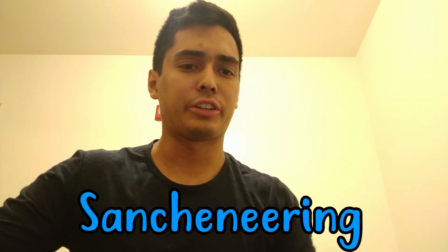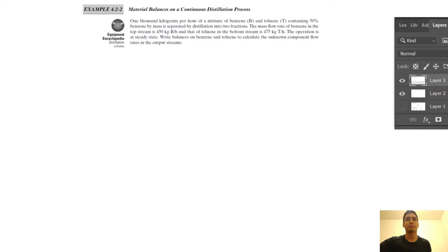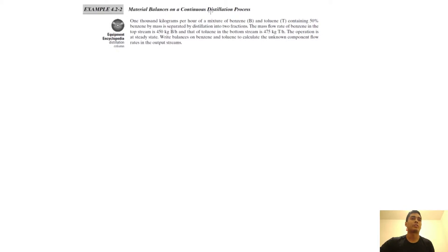Hello, Sanctionerds. Welcome back to Sanctioneering. We're continuing from our last video on mass balance, and we're going to be doing another example on mass balance. Today we have this example from Richard Felder, Chemical Process Analysis. We're in Chapter 2 now, and we're going to be doing a mass balance on a distillation process — a bit of separation processes, which we'll see in the future.